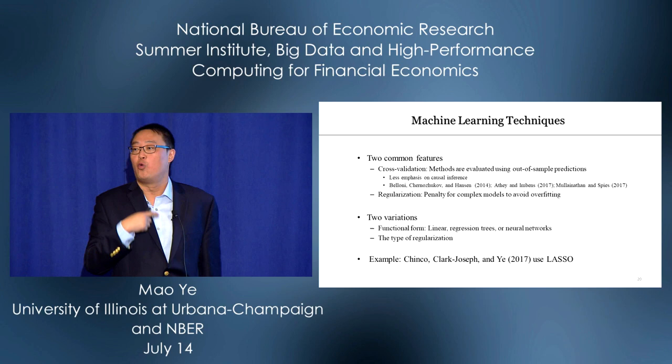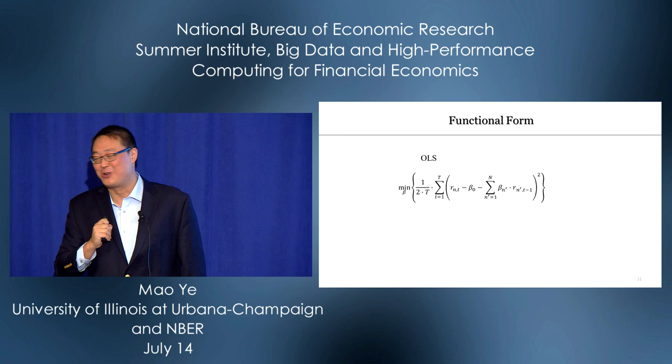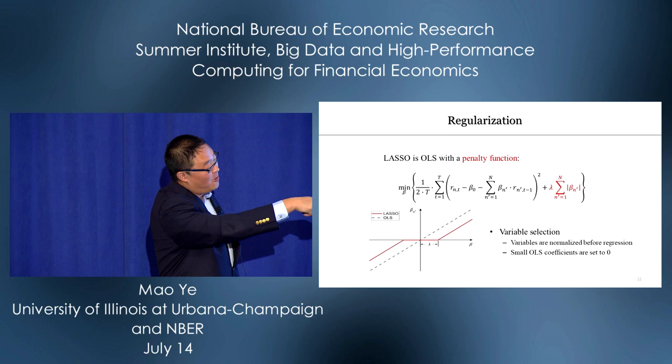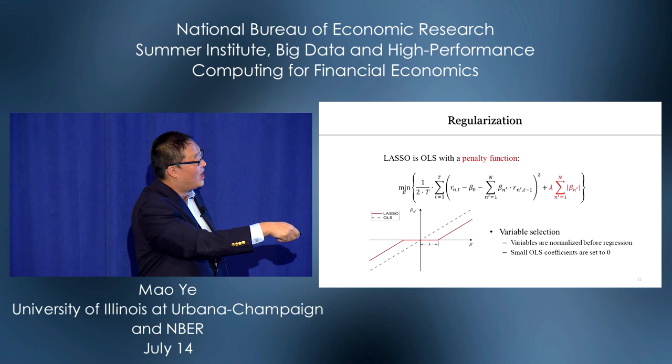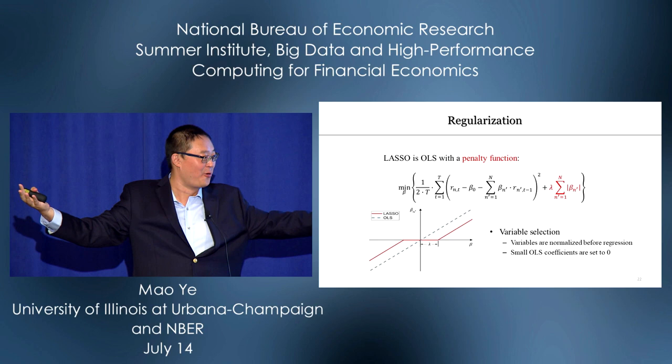In a paper with Alex Hinkle, we use LASSO. LASSO has a linear functional form — like OLS — but with an L1 penalty term imposed on beta. How does LASSO do variable selection? We normalize variables before regression. If beta is small, LASSO sets it to zero. If beta is large, LASSO shrinks it. So if a predictor's beta is too small, LASSO ignores it.